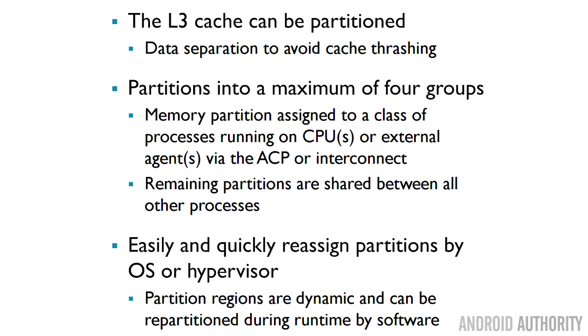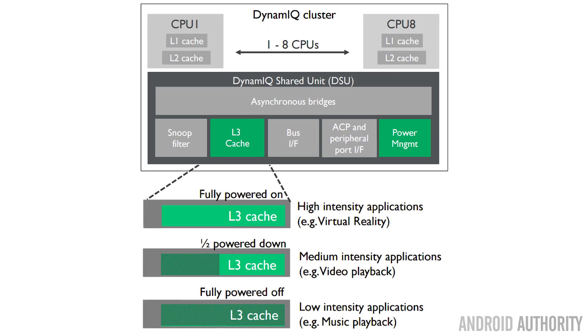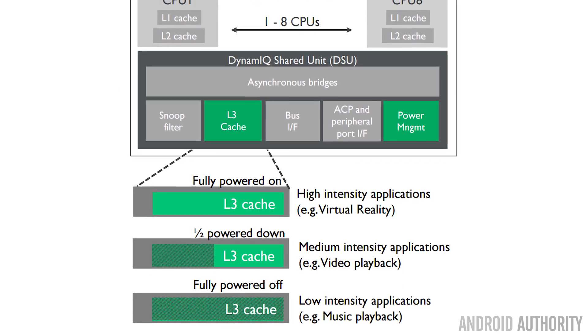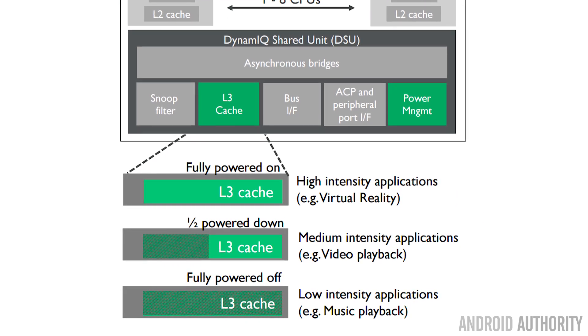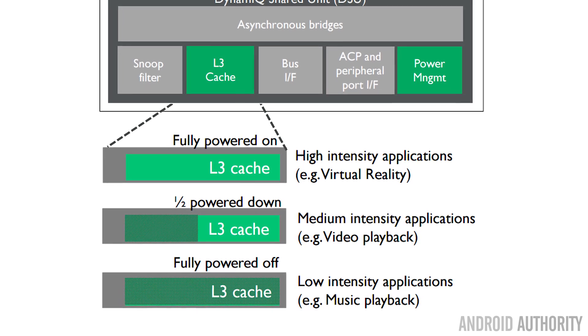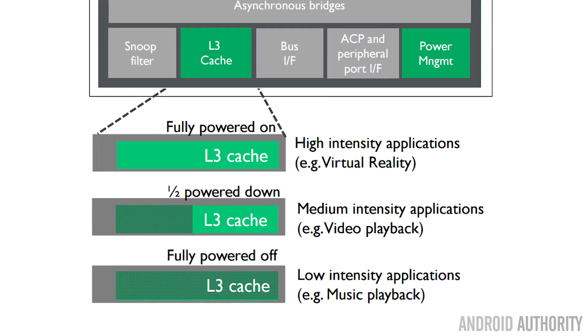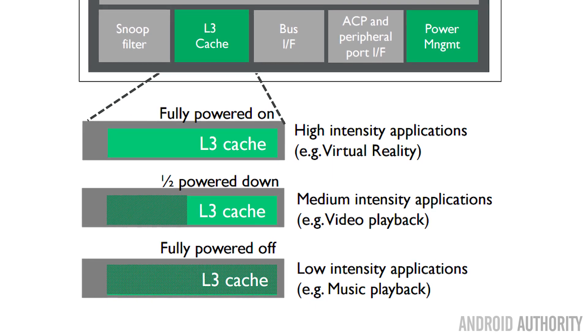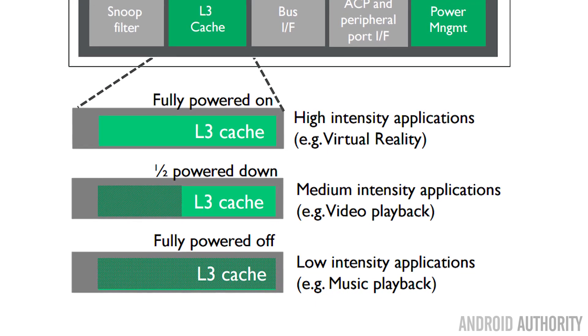The L3 cache is up to four megabytes. In implementing this L3 cache, ARM have done something really clever — the SoC maker is allowed to partition the cache into different sections, which is good for two reasons. First, it stops what they call cache thrashing, where one part of the SoC dominates the shared cache. Second, because of this partitioning, they can shut down parts of the cache to save power. When a particular core powers down, if it's the only core using a section of cache, that section can power down too. There are even scenarios where the cache might not be powered up at all for certain operations, only powered later when needed.